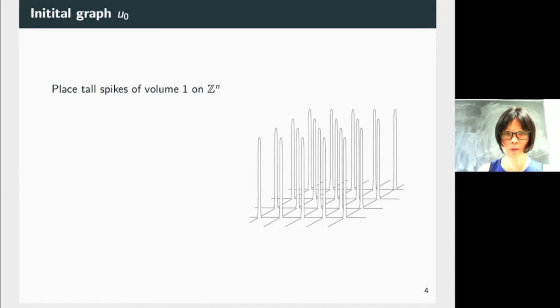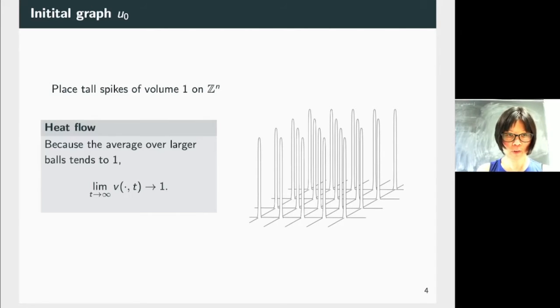In the result of Eidelman-Retnikov, it tells me that if I have a limit as t goes to infinity for the heat flow, it will converge to the average over bigger and bigger ball. So if you take at any point and take the average over bigger and bigger ball, the average is going to be 1. So the heat flow, because the average over larger balls tend to 1, the solution to the heat flow V will converge to the constant 1.